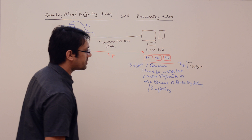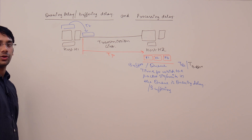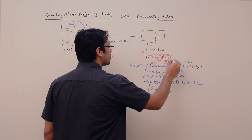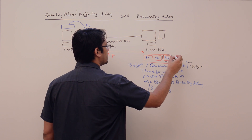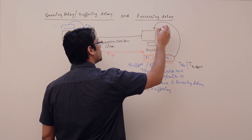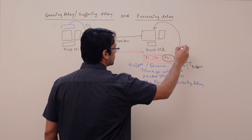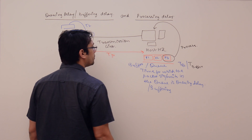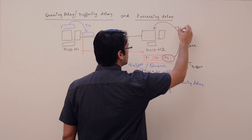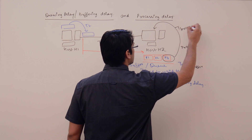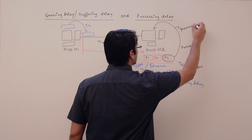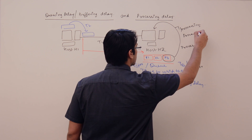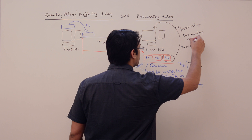When the host machine has enough time, it takes one packet in order of arrival and processes it. The time taken to process the packet is called T_processing, or simply the processing delay.